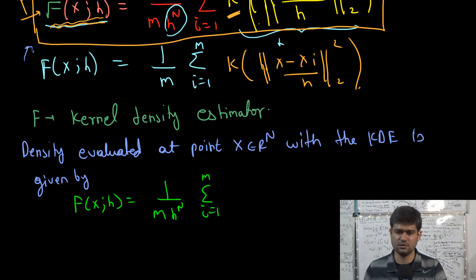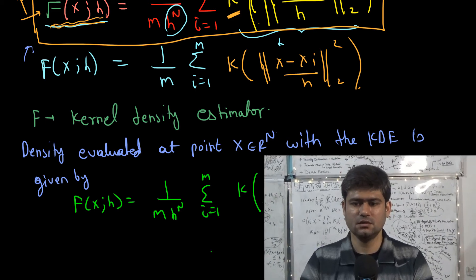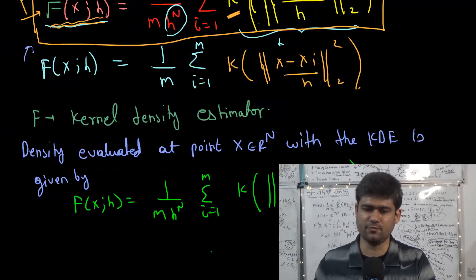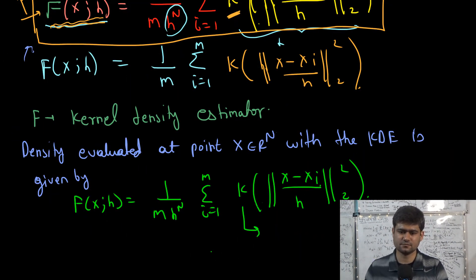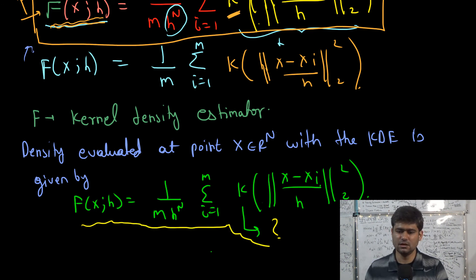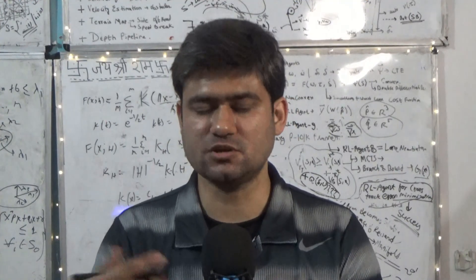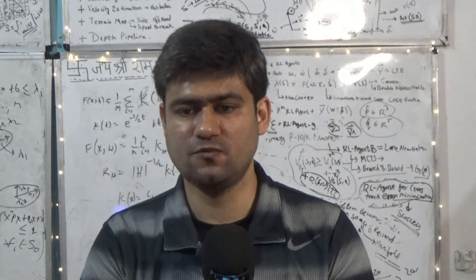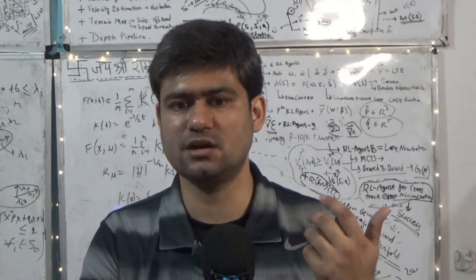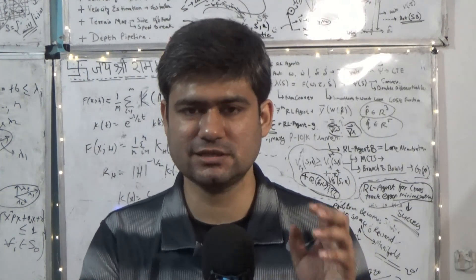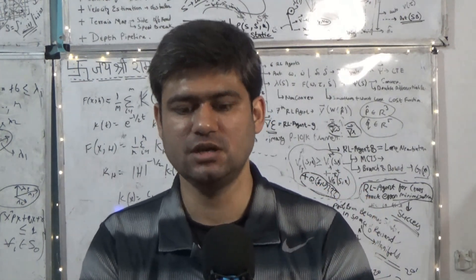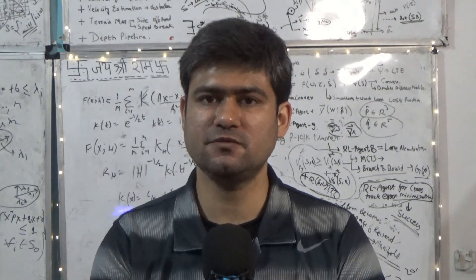The sum is over all i from 1 to m of k of the norm of x minus xi over h squared. Going forward, we will discuss the popular choices of kernel function k, then graphically understand how the kernel density estimator approximates the underlying probability density function, and then discuss how we can use the kernel density estimator to find clusters in a given dataset — through which we will mathematically derive the mean shift algorithm.